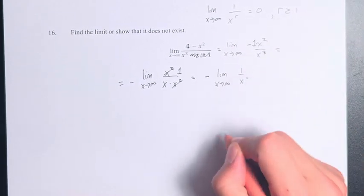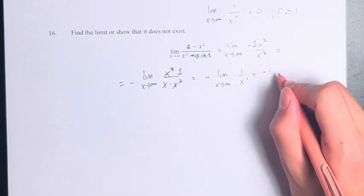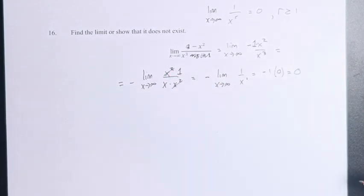Here, the exponent r is equal to 1, so it is included. Therefore, we can say this is negative 1 times 0, which is 0. Therefore, the value of the limit is equal to 0.